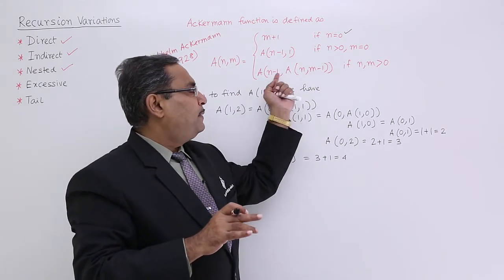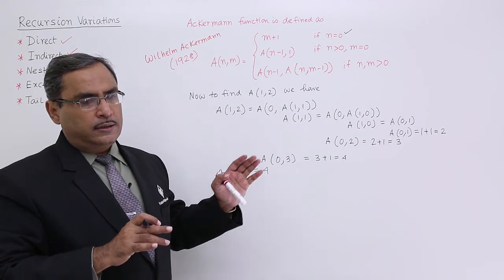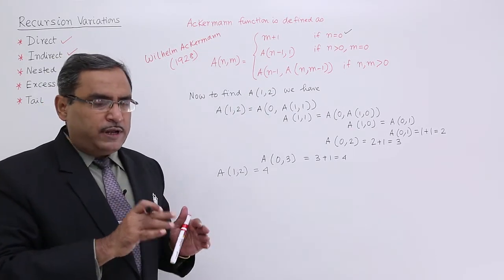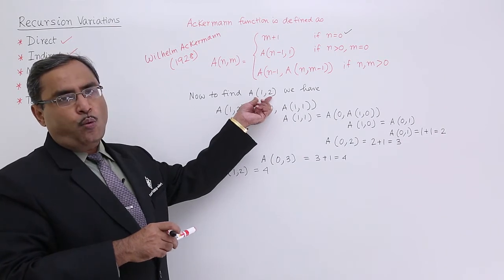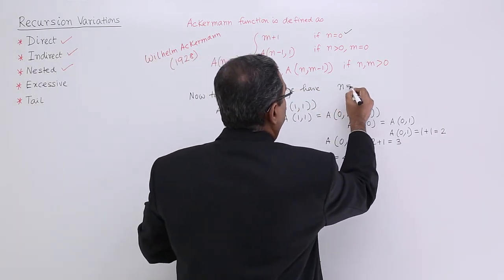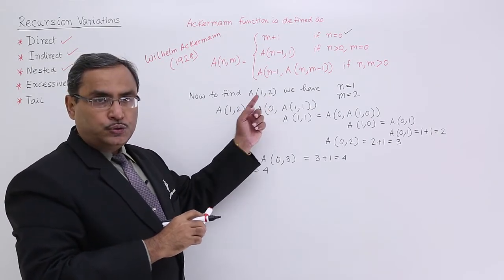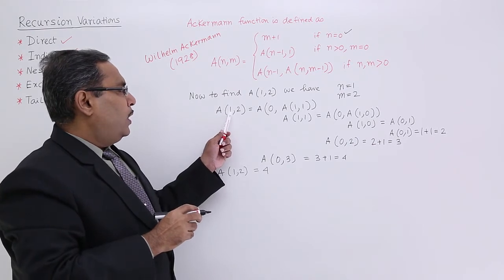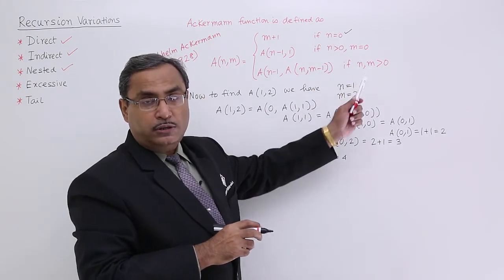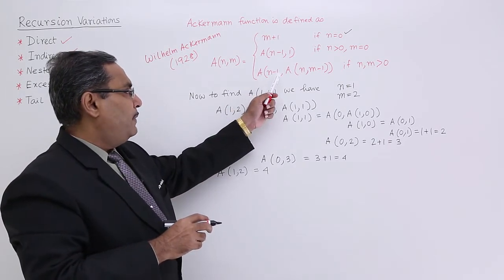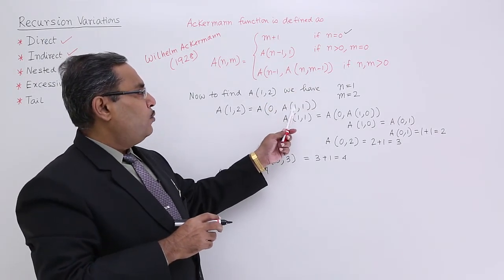This is the nested recursion. Now, if I want to trace this, let us call A(1, 2). So n = 1 and m = 2. A(1, 2) does not match the first two cases, but it matches the third case because both n and m are not equal to 0. So it becomes A(n-1, A(n, m-1)) = A(0, A(1, 1)).